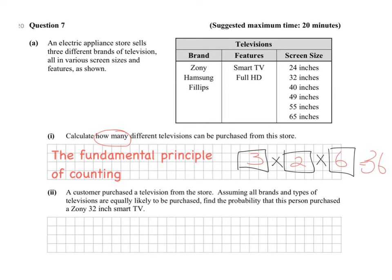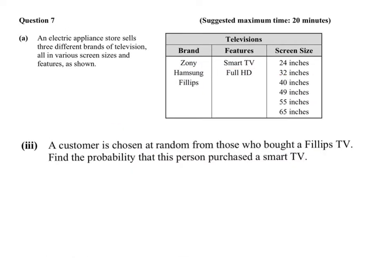Number 2: a customer purchased a television from the store. Assuming all brands and types are equally likely to be purchased, find the probability that the person purchased a Zoni 32-inch smart TV. They picked that specific combination, which means 1 choice out of 36. Remember, whenever you see 'find the probability,' your answer needs to be a decimal or a fraction.